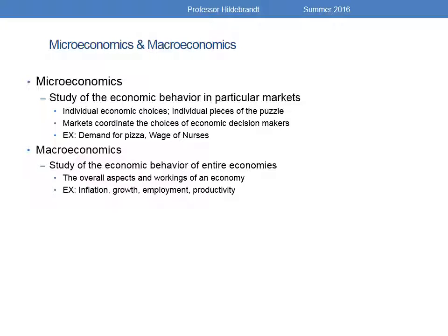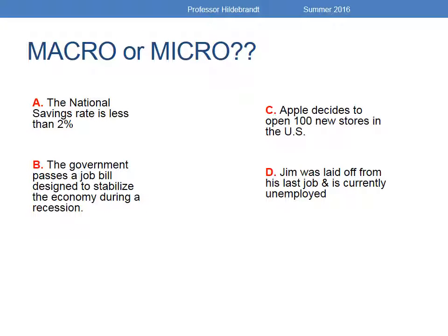Let's look at a few examples and see if you can determine whether each is a macro or micro topic. Example A: the national savings rate is less than two percent — this is actually the average for the United States. Since we see the word 'national,' that should give you a hint that this is macro, the bigger picture. Example B: the government passes a job bill designed to stabilize the economy during a recession. Again, because this is on a more national level, this would also be a macro topic.